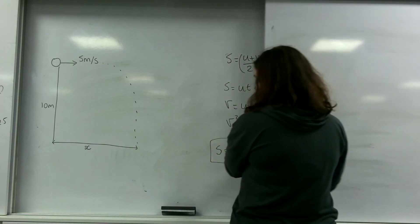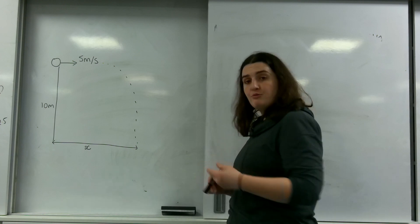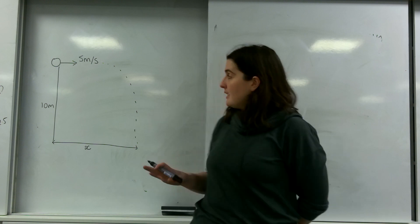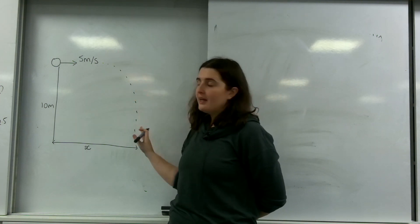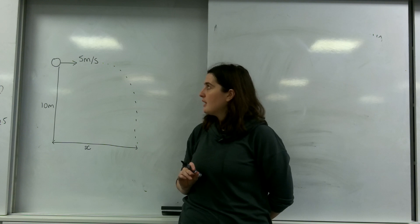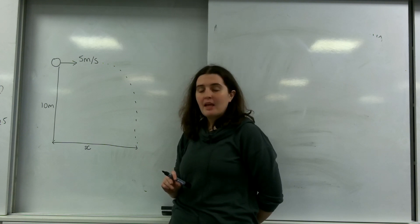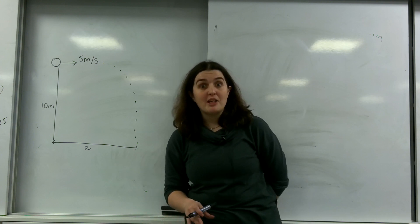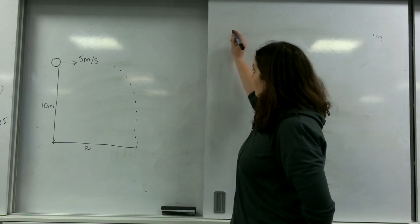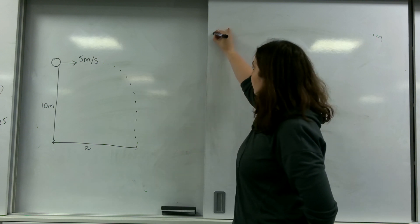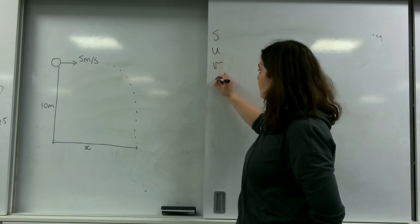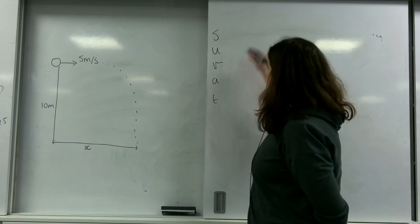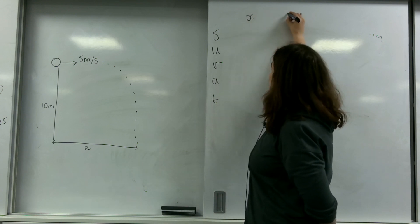Knowing this, we can get some really useful information. I'm going to start with a basic projectile problem: something being fired off a cliff at a velocity of 5 metres per second, falling down a cliff that's 10 metres, and we're going to find lots of information about this. Like with all SUVAT, you start by writing the SUVAT variables down the side, then break them up into the X direction and the Y direction.